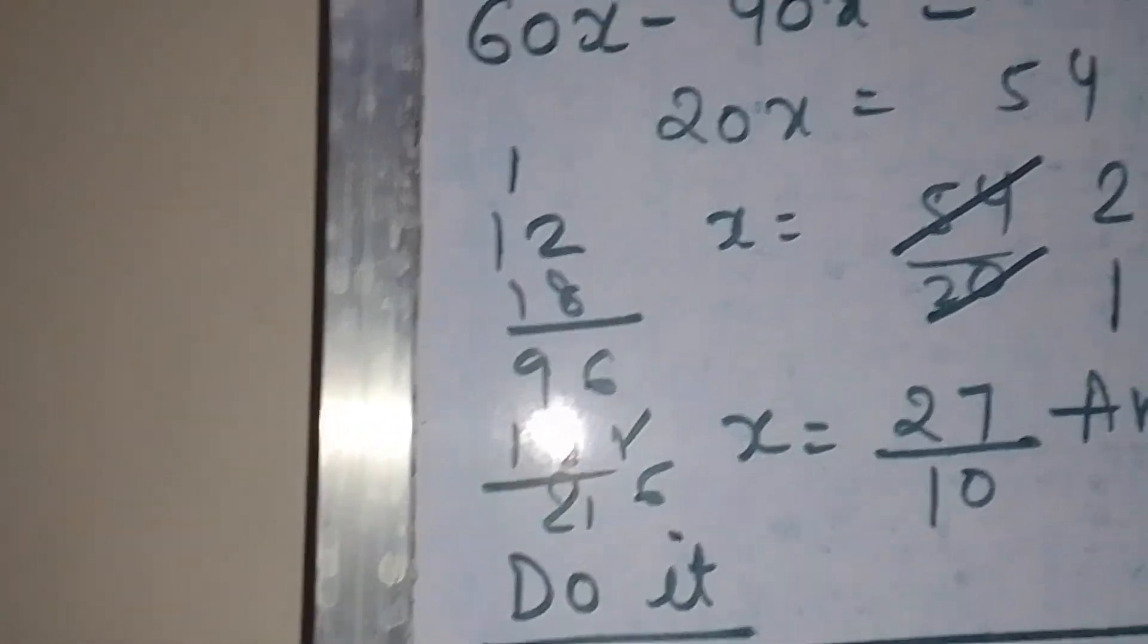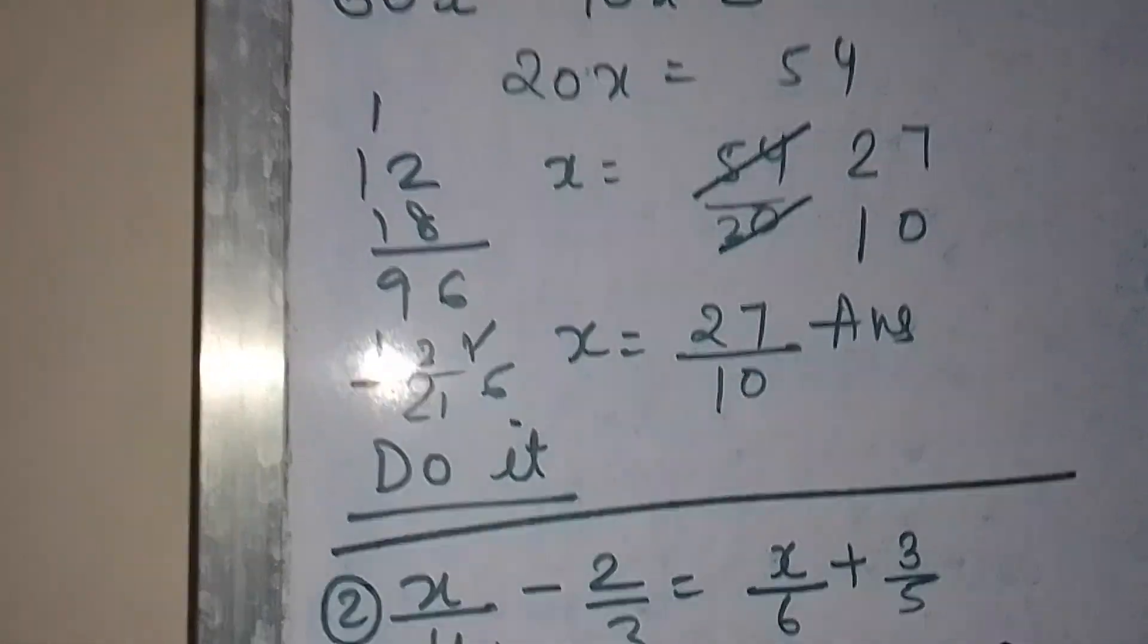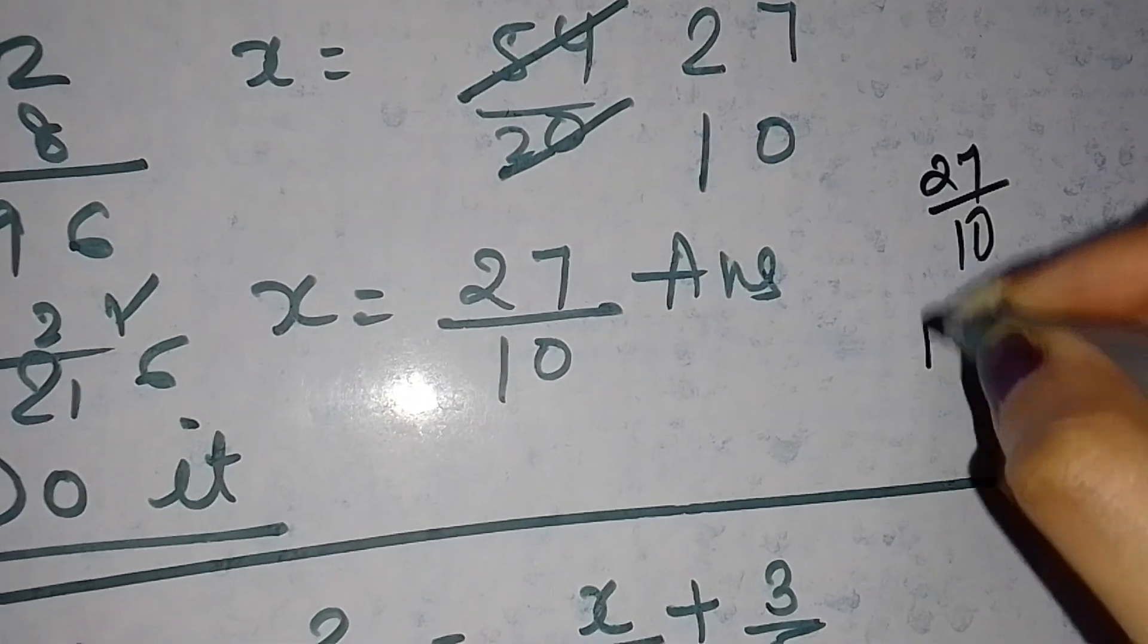x equals 54 upon 20, which simplifies to 27 upon 10. This is our answer.